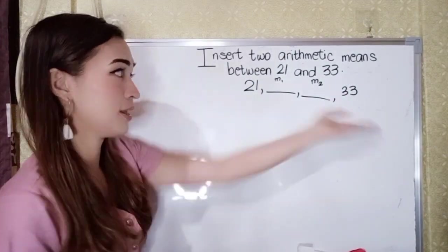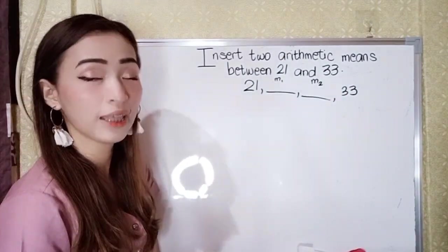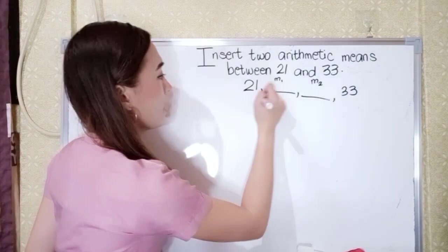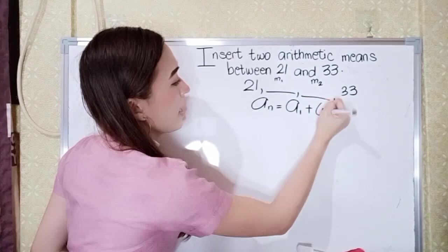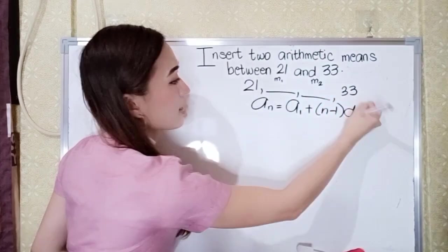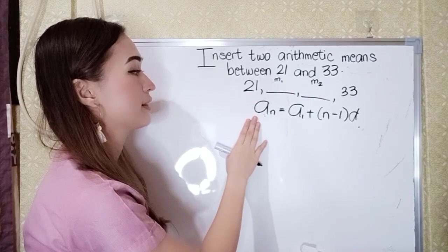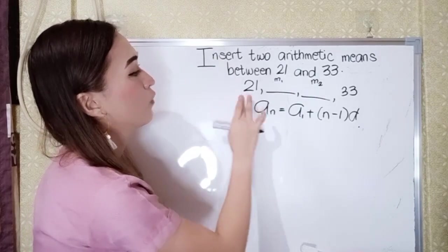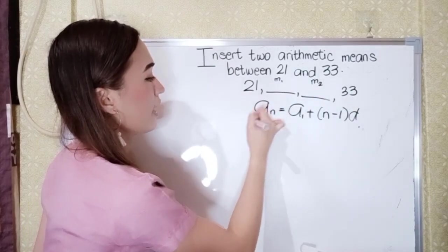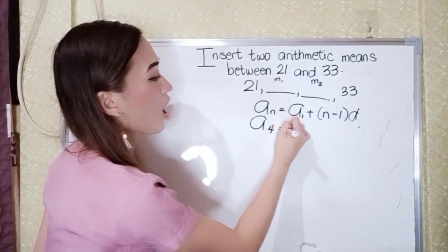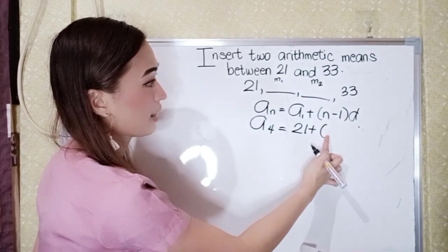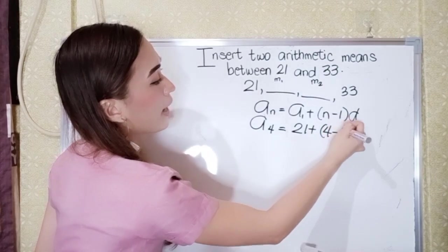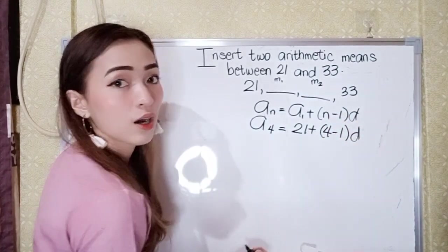Now, to get the means of this arithmetic sequence, we need the formula, which is A sub N equals A sub 1 plus N minus 1 D. So we have to count. So what is our A sub N? 1, 2, 3, 4. So that is A sub 4. So our A sub 1 is 21 plus our n is 4 minus 1D.